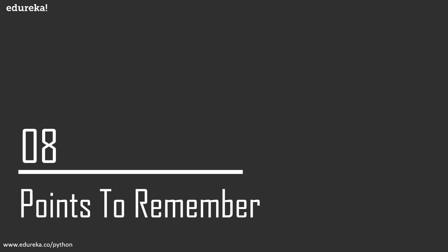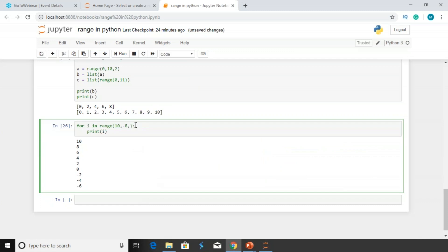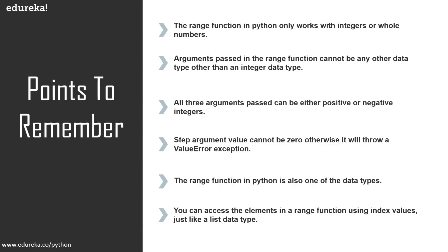A few points to remember while using a range function in Python. First, the range function in Python only works with integers or whole numbers — arguments cannot be any other data type. Second, all three arguments can be either positive or negative integers. Third, the step argument value cannot be 0 — it will throw a ValueError saying 'range() arg 3 must not be zero.' The range function is also one of the data types in Python and you can access its elements using index values, just like a list.